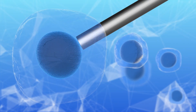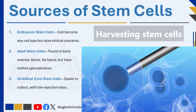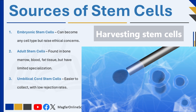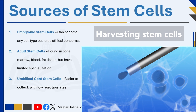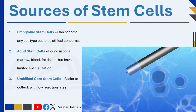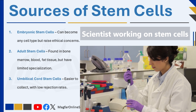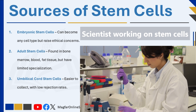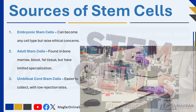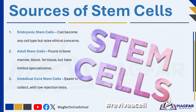Human stem cells can be harvested or collected in different ways. Firstly, embryonic stem cells are harvested from human embryos during early development. This is the best source because they can turn into any cell type; however, harvesting them destroys the embryo, leading to ethical and moral concerns. Secondly, adult stem cells are found in the bone marrow, blood, and adipose or fat tissue of an adult, and can be used in treatments for conditions like leukemia. Stem cells have also been discovered in the brain, skin, hair, eyes, and dental pulp. However, adult stem cells are more limited in their ability to specialize compared to embryonic stem cells.